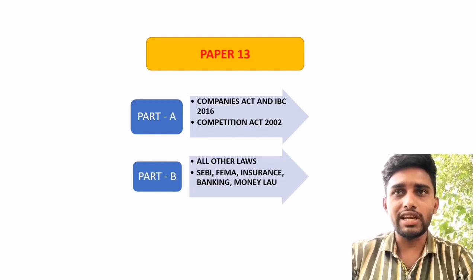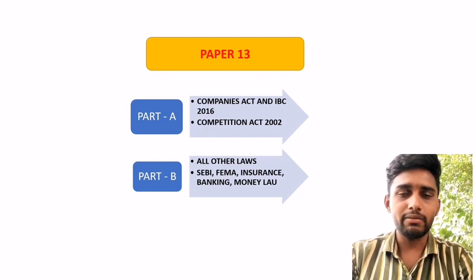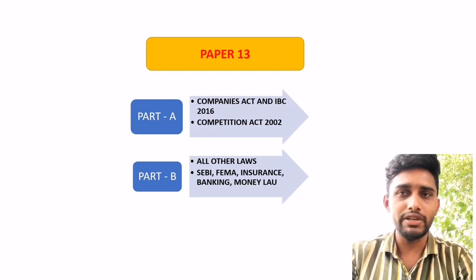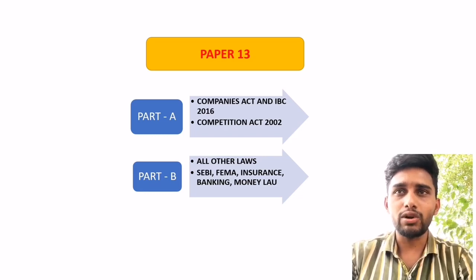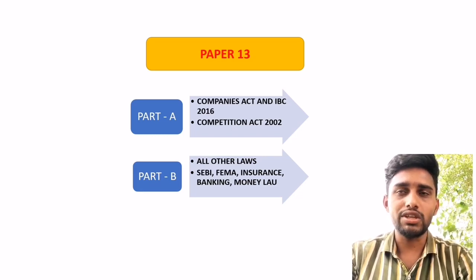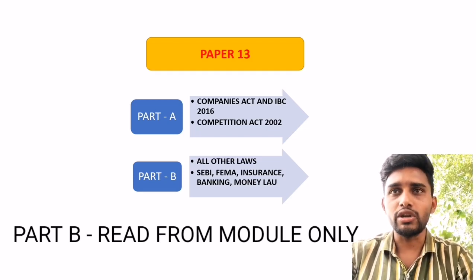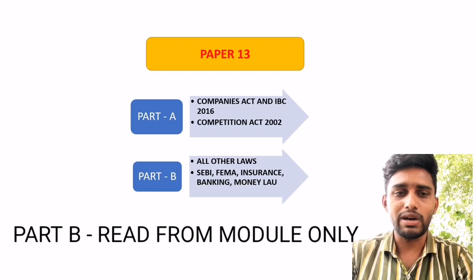According to me, there are only two parts in Paper Number 13 — Part A and Part B — because the preparation strategy for Part A will be different and the preparation strategy for Part B will be different. In Part A I have included the Companies Act, Insolvency and Bankruptcy Code 2016, and the Competition Act. In Part B, remaining all other laws are included, like SEBI, FEMA, Insurance, Banking, and Money Laundering.